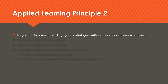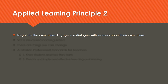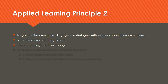Applied Learning Principle number two is negotiate the curriculum — engage in a dialogue with learners about their curriculum. Working in VET is a very structured and regulated environment. We teach out of training packages that have qualifications and a set number of core and elective units. However, there are some things we can change. We can change the way we deliver, appeal to a range of learning styles, use problem-based learning, change the order we teach in, or teach units in a holistic fashion. We can even give students a choice of electives — super handy if you've got a trainee so they can pick electives that match what they do in the job. We can change how the room is set up, and we can even have some scope in changing how our students are assessed.